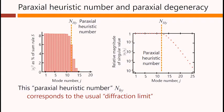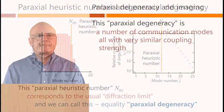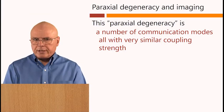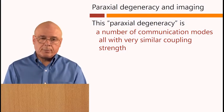This paraxial heuristic number corresponds to our usual ideas of a diffraction limit, by the way. And we can call this approximate equality of the coupling strength's paraxial degeneracy.